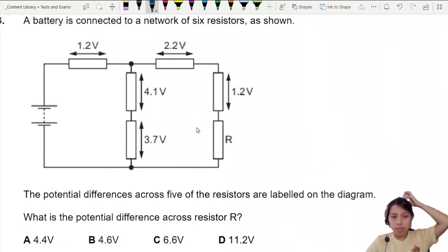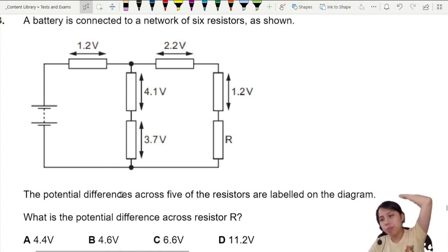A battery is connected to six resistors. The potential difference for five of them are given already. What's the potential difference across R? This is like a puzzle, man.